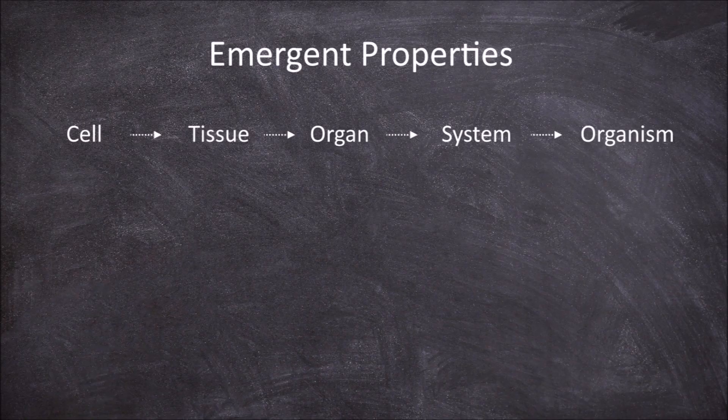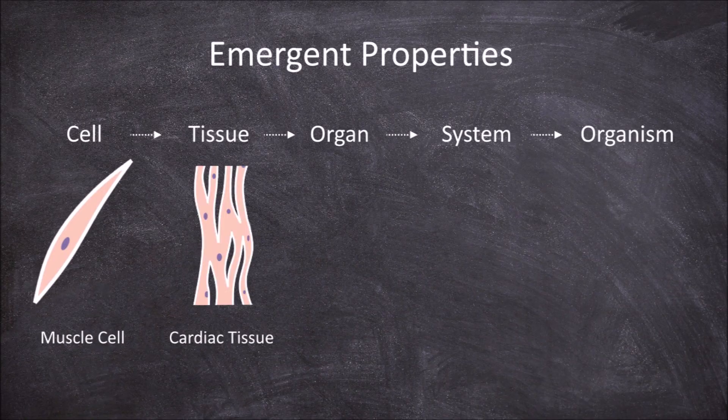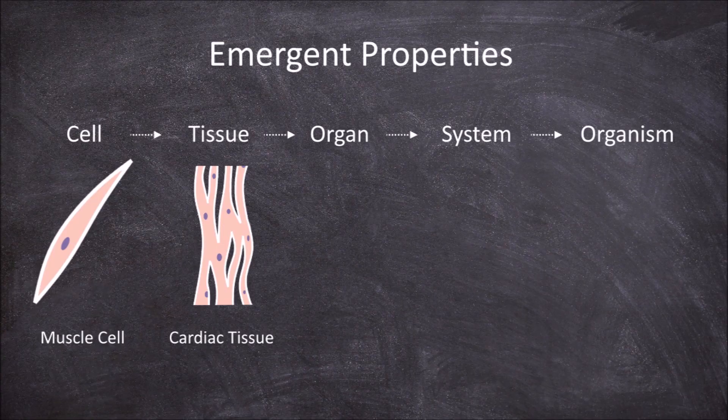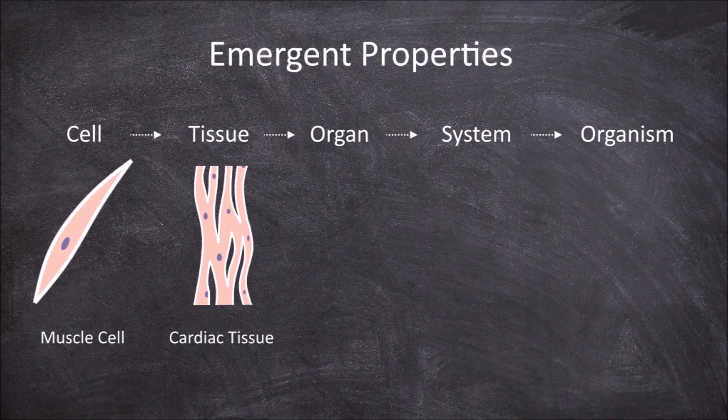At the cell level we have a muscle cell. At the tissue level we have cardiac tissue, which is made up of multiple muscle cells and is able to form the new task of synchronized contractions.